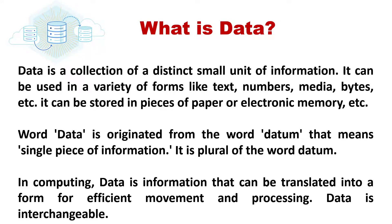So what is data? Data is a collection of distinct small units of information. It can be used in a variety of forms like text, numbers, media, bytes, etc. It can be stored in pieces of paper or electronic memory. The word data is originated from the word datum, which means a single piece of information — it is the plural of datum. In computing, data is information that can be translated into a form for efficient movement and processing. Data is interchangeable.